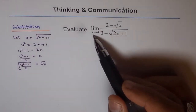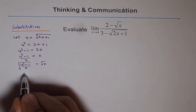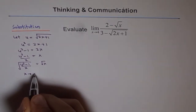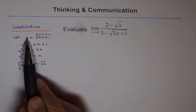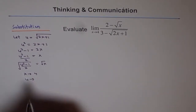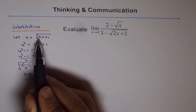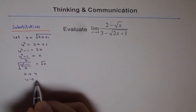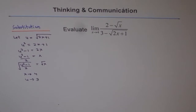Let us see what happens to the limit. As x approaches 4, what does u approach? We replace x with 4 in u equals square root of 2x plus 1: 2 times 4 is 8, 8 plus 1 is 9, and square root of 9 is 3. So u approaches 3.